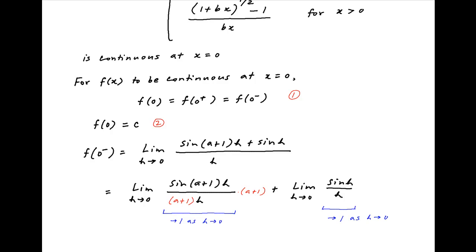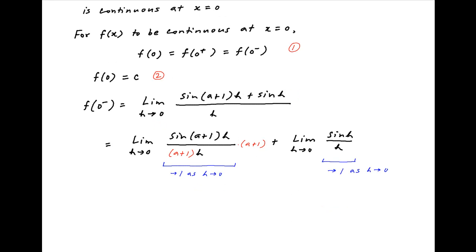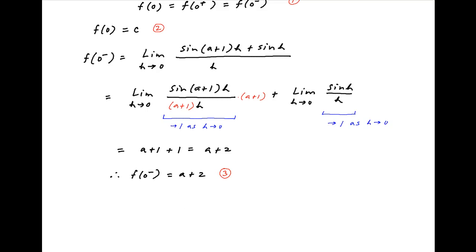Therefore, the left-hand limit of f(x) at x = 0 is equal to (a+1) + 1, which is equal to a + 2. Let's call this equation 3.